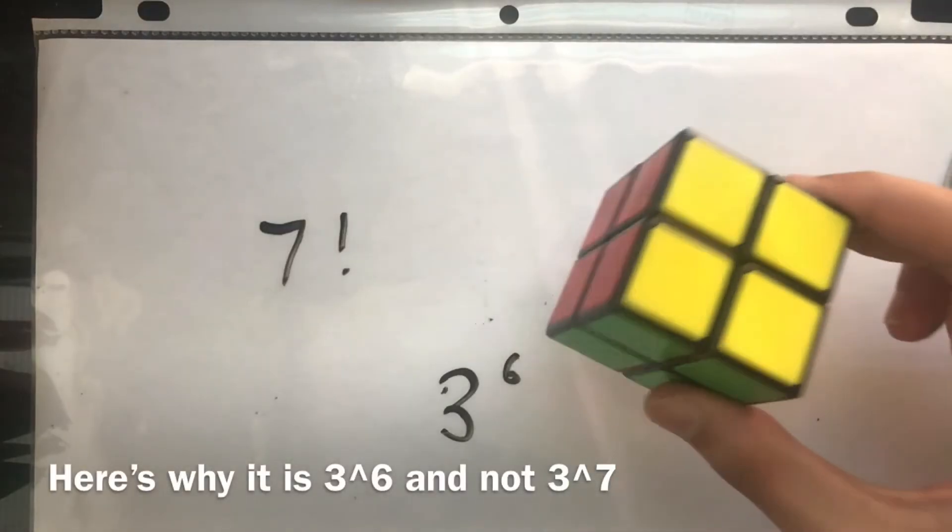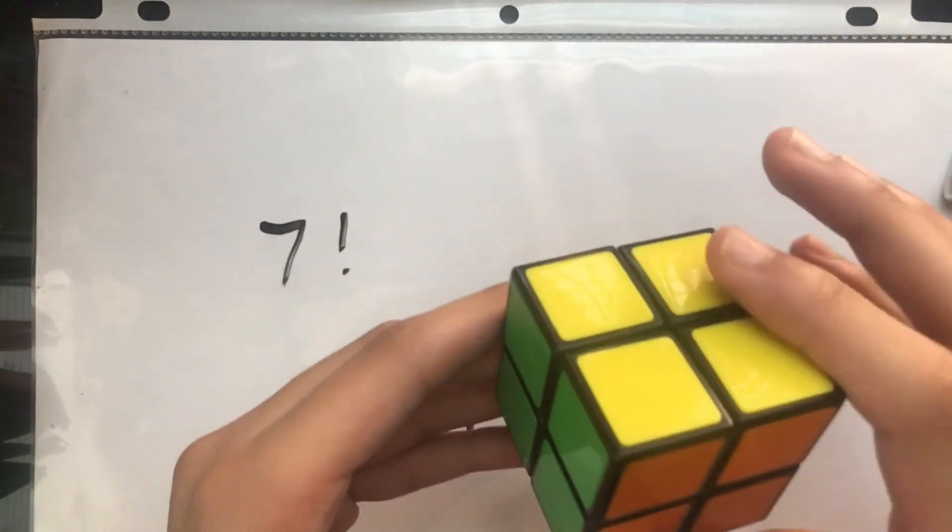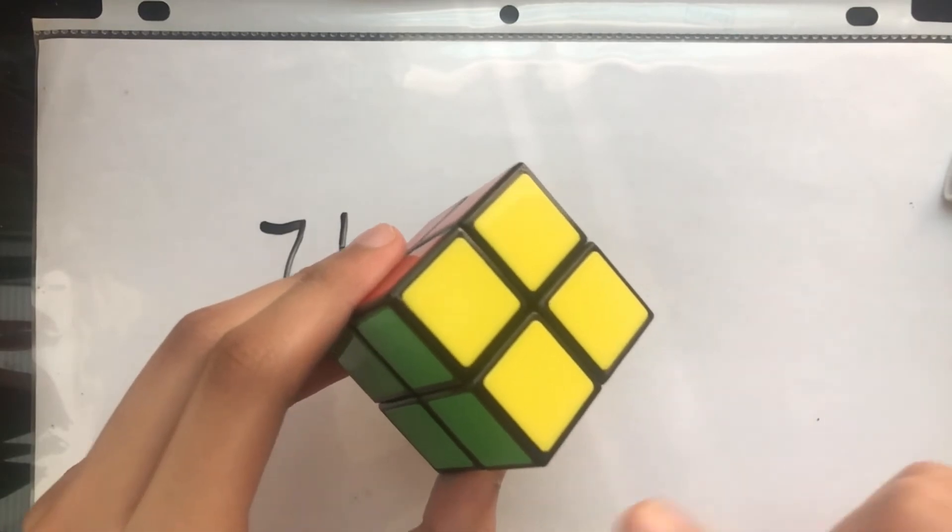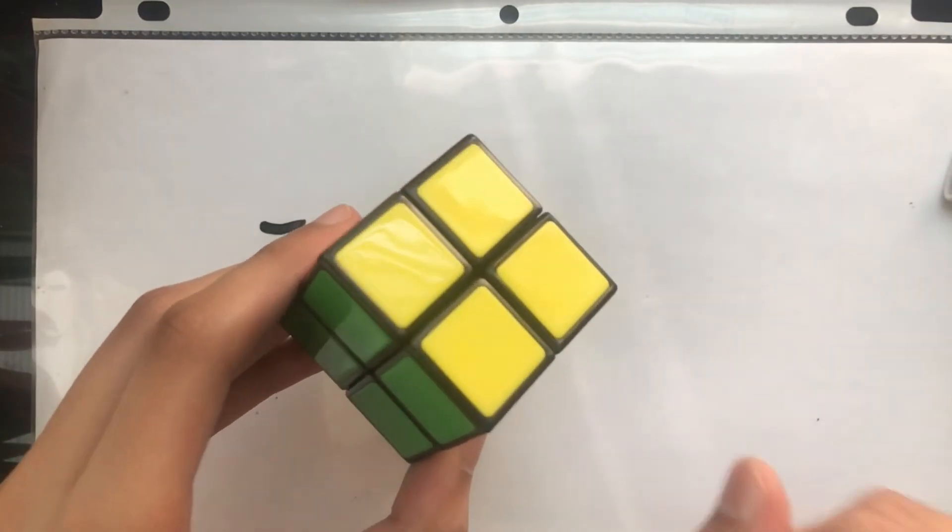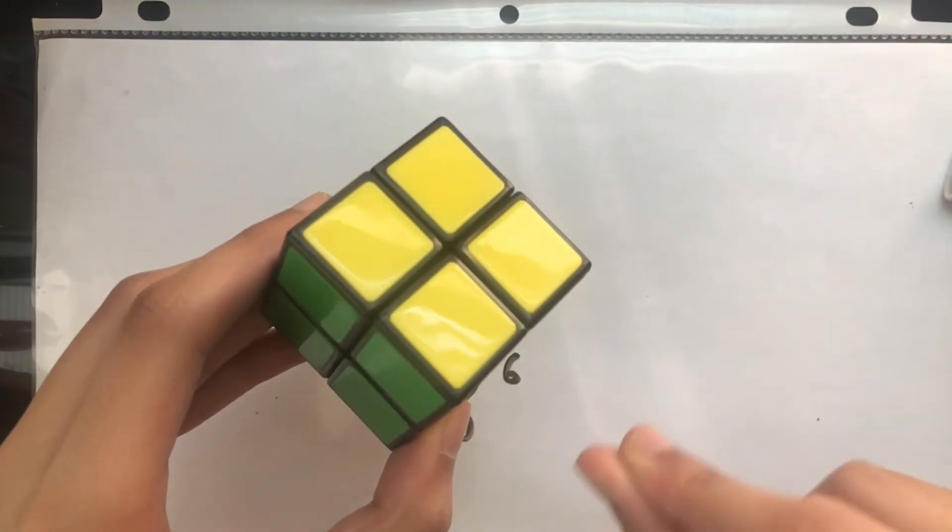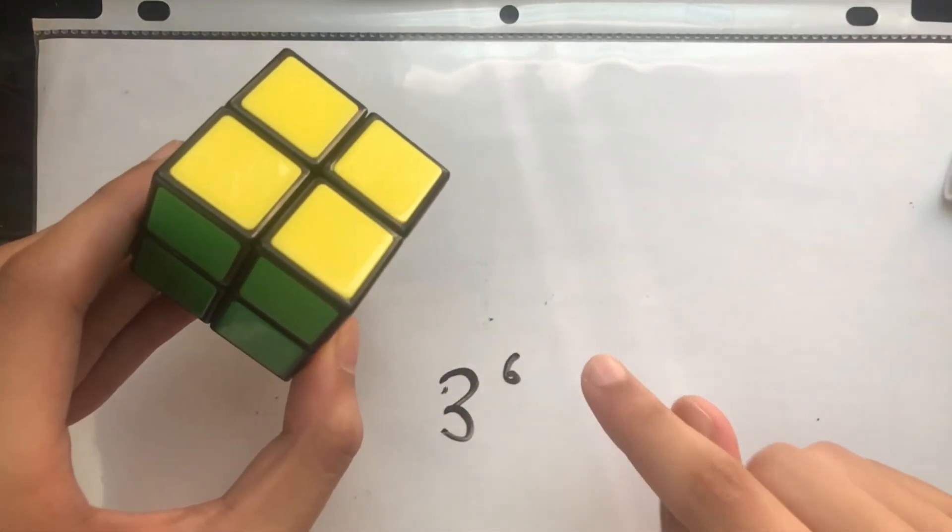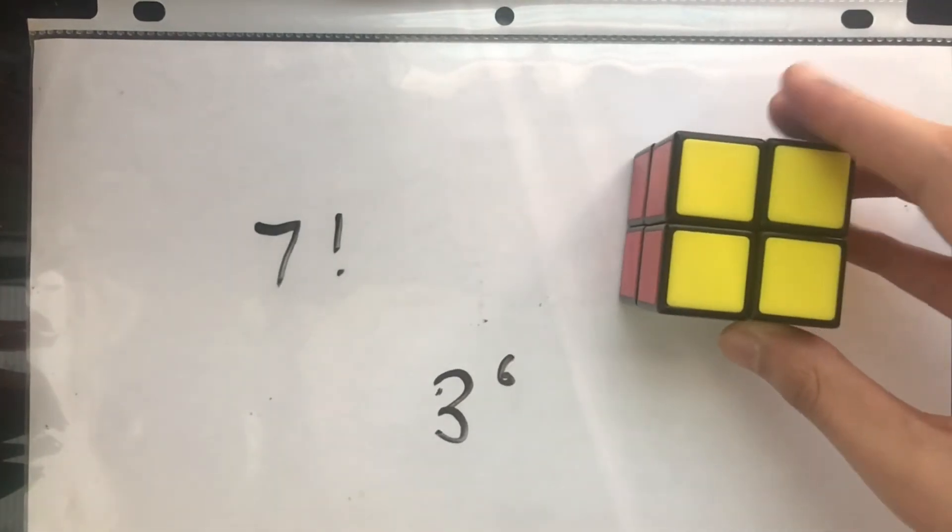So we considered the orientations of the 7 corners since that one is fixed. And 6 of them can be oriented in 3 ways again. But one remains fixed because that one will depend on the orientation of the other. So again, that's why we have 3 to the power of 6. So this gives us 3 to the power of 6 orientations in total.